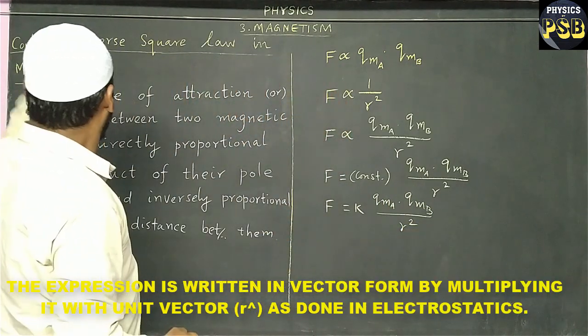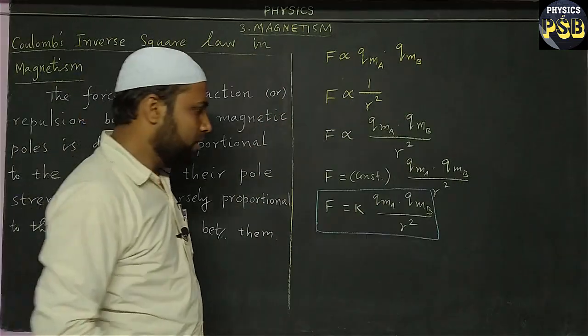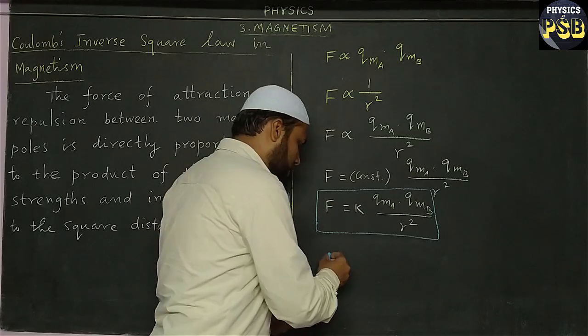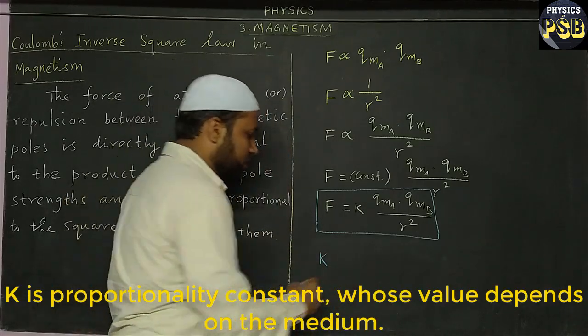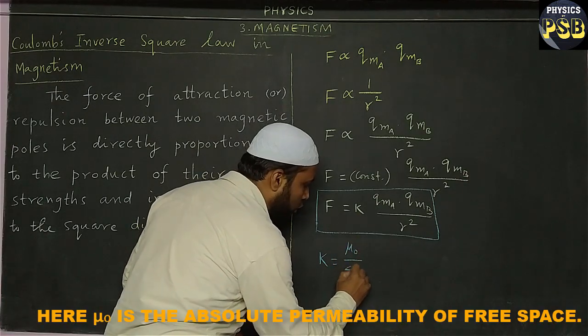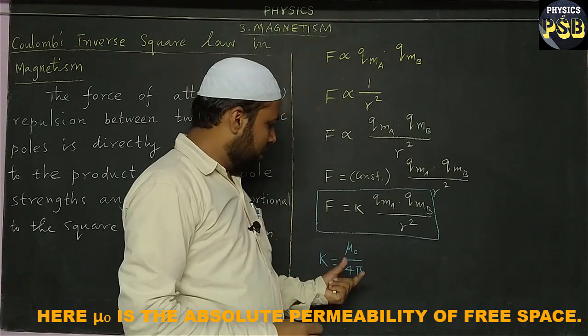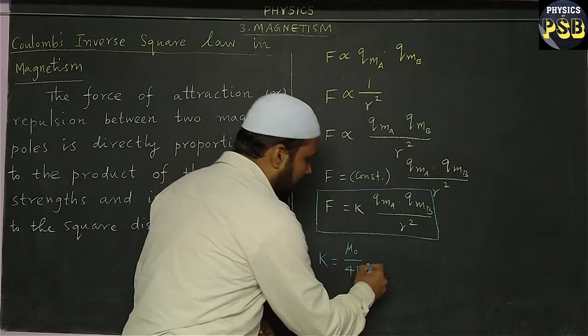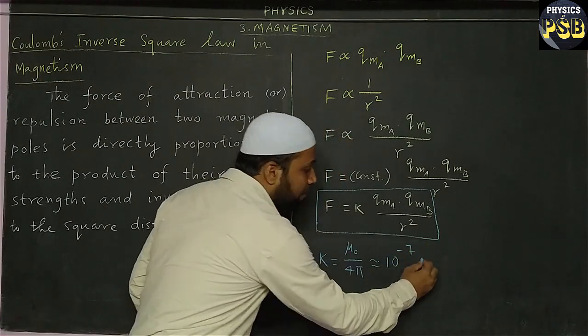This is the final equation we get. We call this one as Coulomb's inverse square law in magnetism. Here, k is a proportionality constant, which is equal to mu nought upon 4 pi. For air or free space, its value is approximately equal to 10 to the power minus 7 henry per meter.